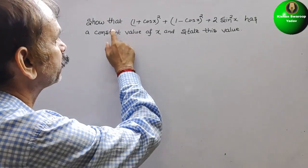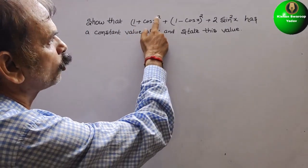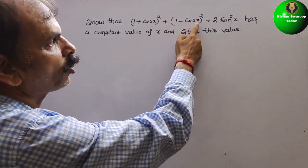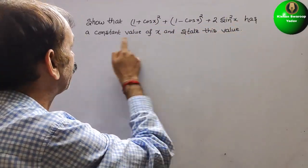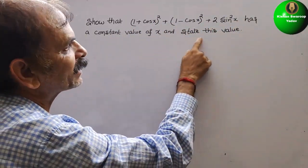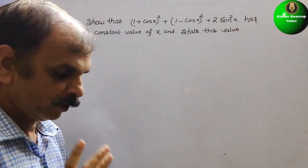Your question is, show that (1+cos x)² + (1-cos x)² + 2sin²x has a constant value of x and state this value.